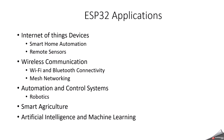When it comes to ESP32 applications, we can use it for smart home automation, remote sensors, and all IoT-related applications. It also supports wireless communication because it has inbuilt Wi-Fi and Bluetooth connectivity. For automation and control systems, you can use it for robotics applications and smart agriculture. At the same time, you can use ESP32 for artificial intelligence and machine learning. ESP32 is one of the most capable SOCs available in the market with low cost, supporting a wide variety of applications.